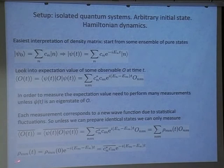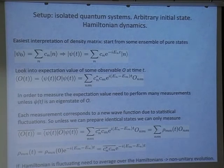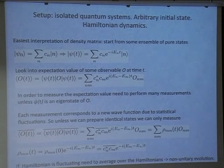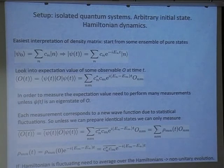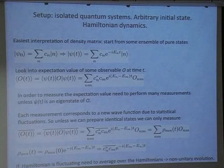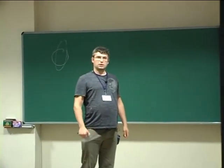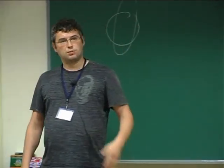One thing I want to emphasize: there is a big assumption that the Hamiltonian is not fluctuating. If each experiment gives a different Hamiltonian — say one with a nearby subway, one without — this immediately introduces uncertainty in the evolution. This is the simplest way to get decoherence: always pure evolution, but each time slightly different Hamiltonian. This can be tracked with Lindbladian formalism and dissipation.